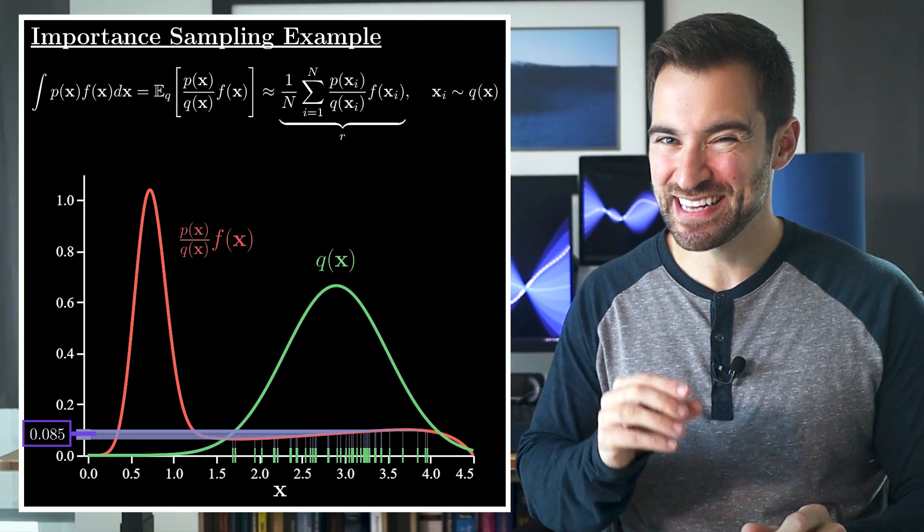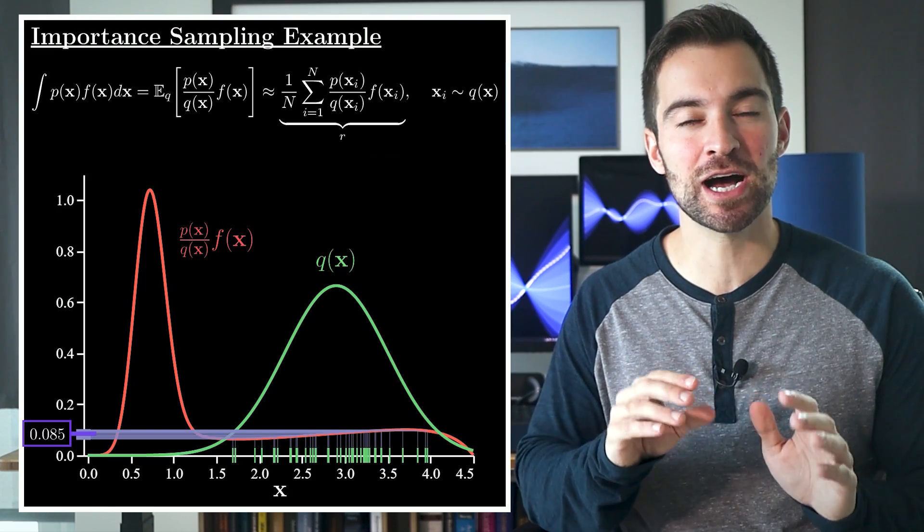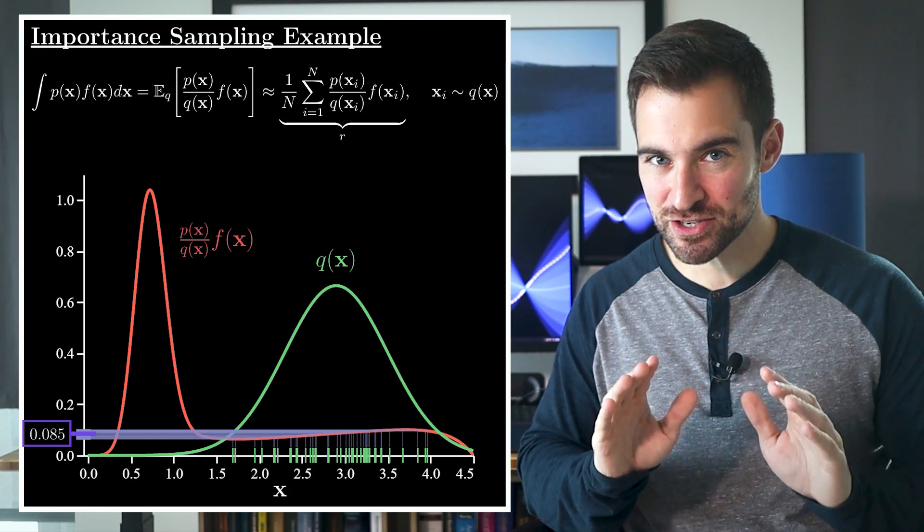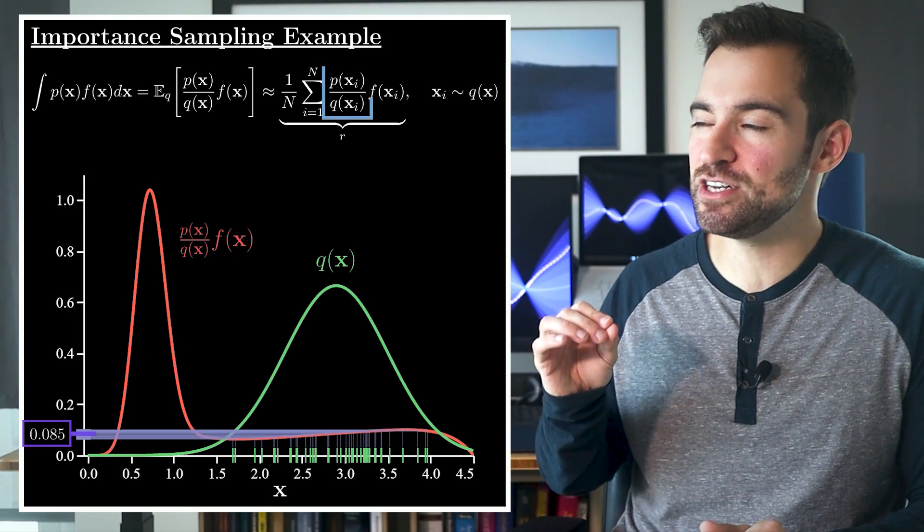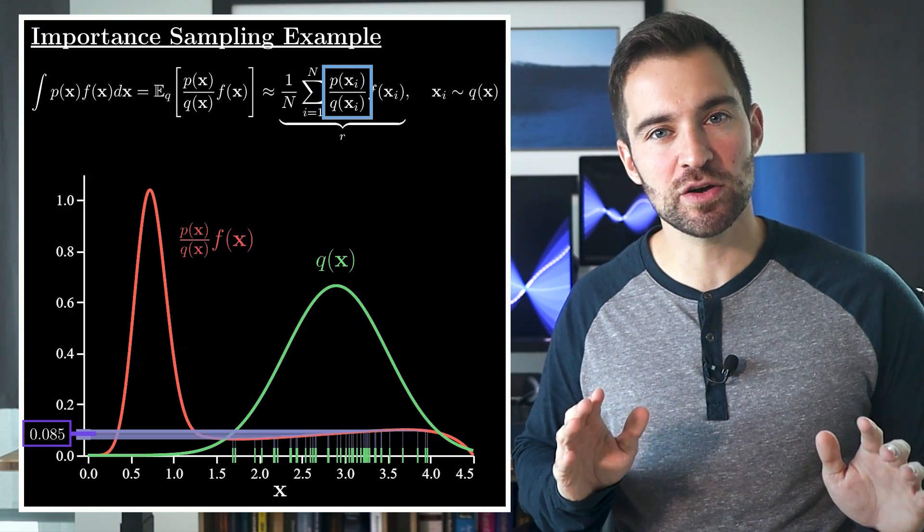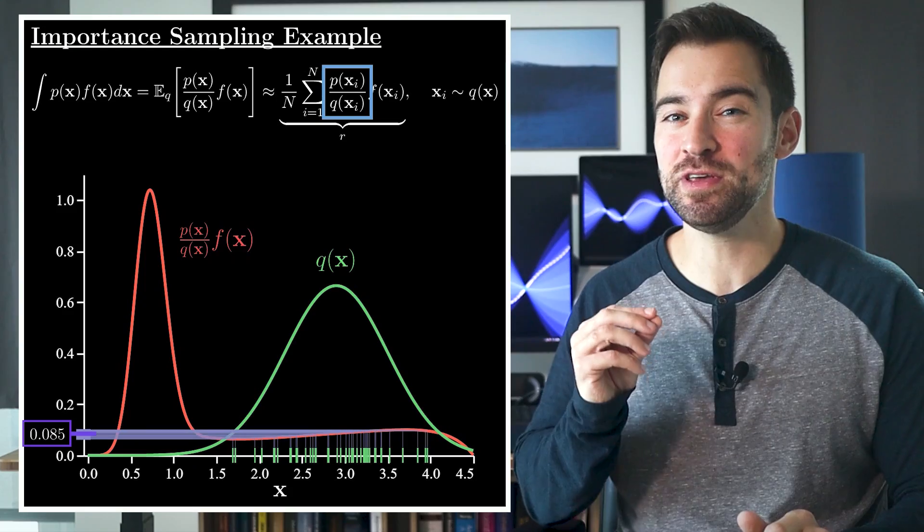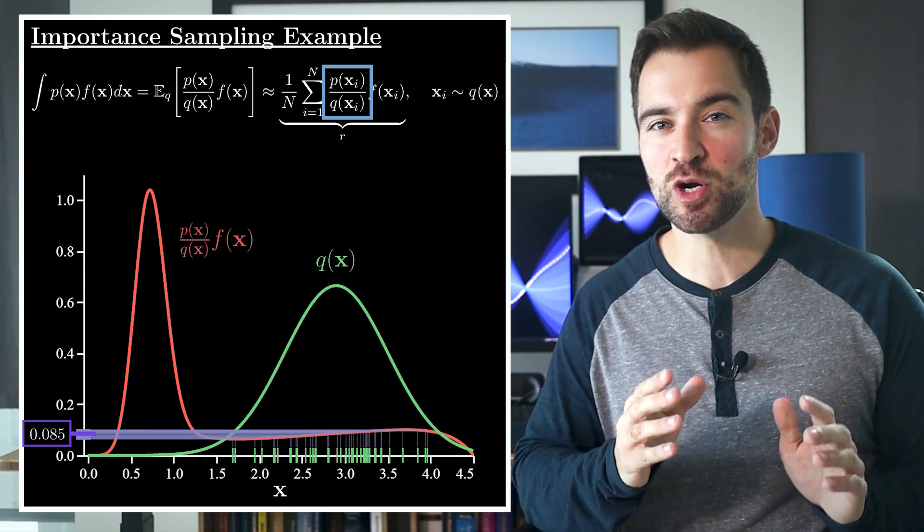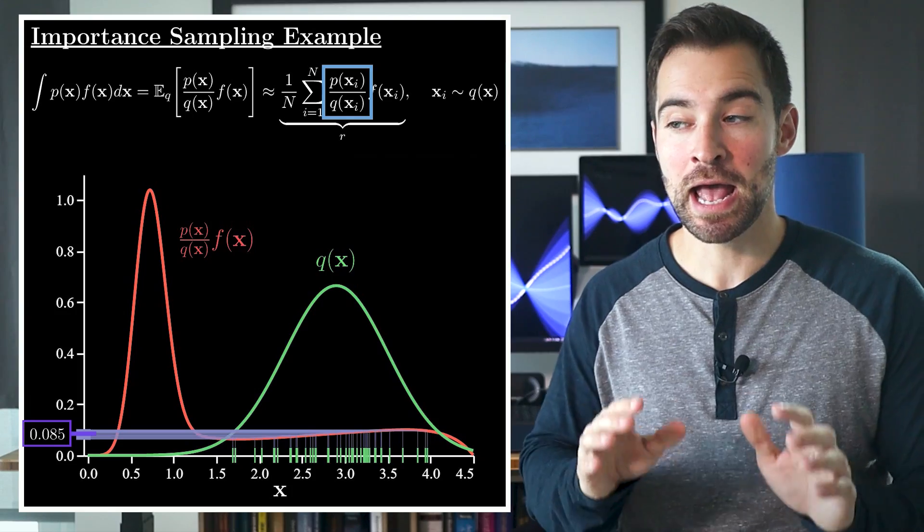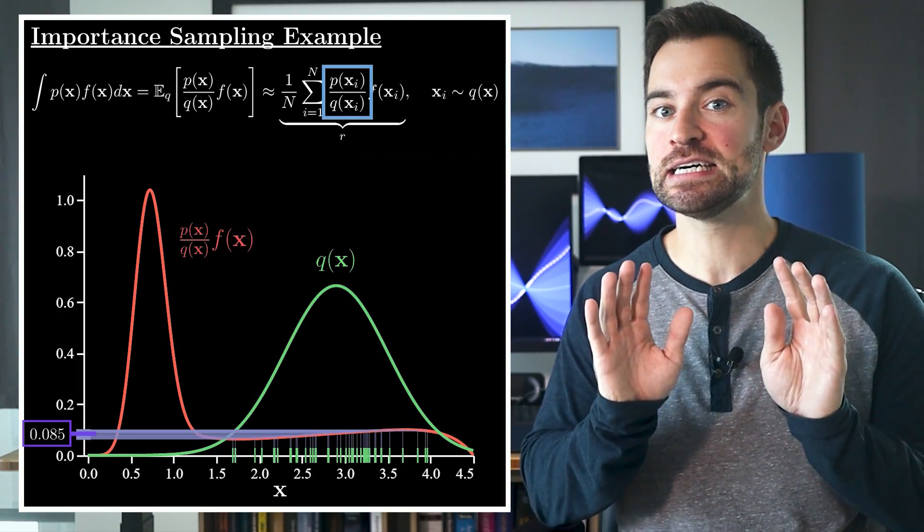Also, fair warning, it's very easy to do a terrible job selecting q, especially in high dimensions. The symptom of that will be the density ratio will vary wildly over the samples, and a majority of them will be very small. This means your average will be effectively determined by a small number of samples, making it high variance. Not good.